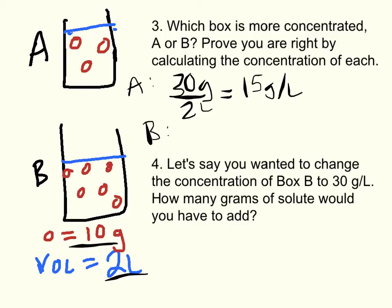Now what about box B? Box B has 1, 2, 3, 4, 5, 6 dots in it. If each one weighs 10 grams, that's 6 times 10, which is 60 grams divided by 2 liters.